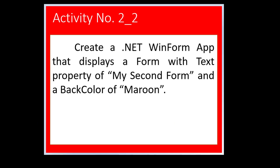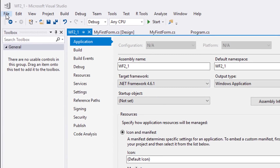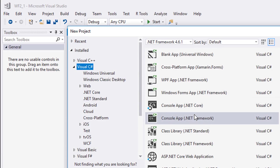For our second activity, we will create a Windows Form App that displays a form with a text value of 'My Second Form' and the background should be maroon. Let's create a new Windows Form App project and name it WF2_2.